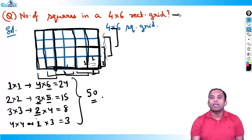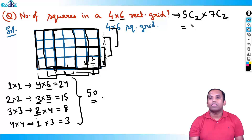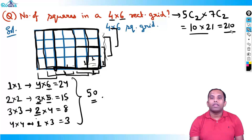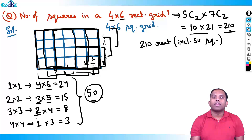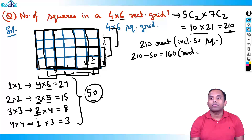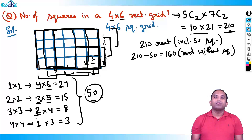How many rectangles are there in the 4×6 grid? 4+1=5, so 5C2=10; 6+1=7, so 7C2=21. Total = 10×21 = 210 rectangles. These 210 rectangles include the 50 squares. So rectangles without squares = 210 − 50 = 160 rectangles. This is the whole concept.